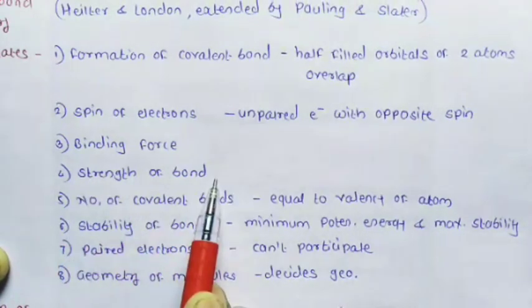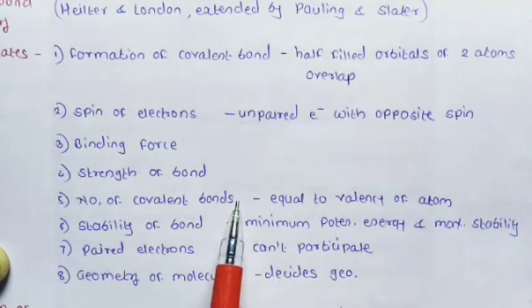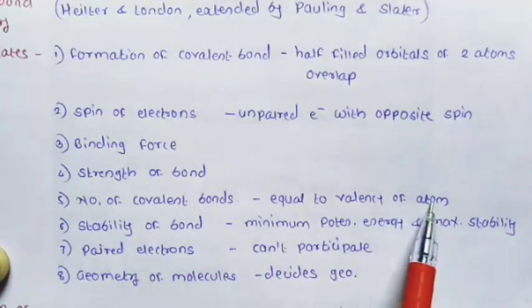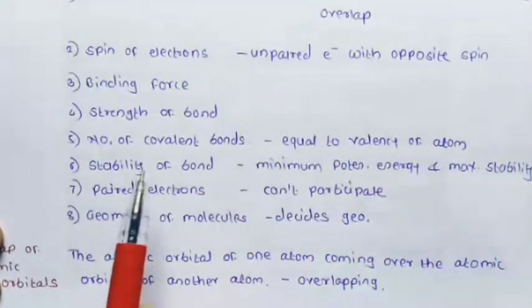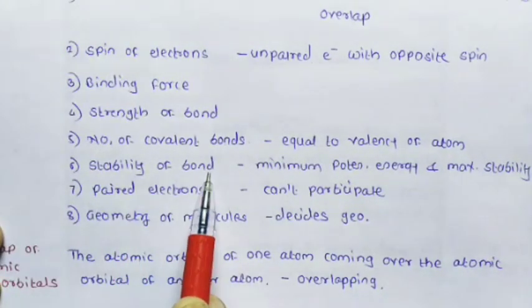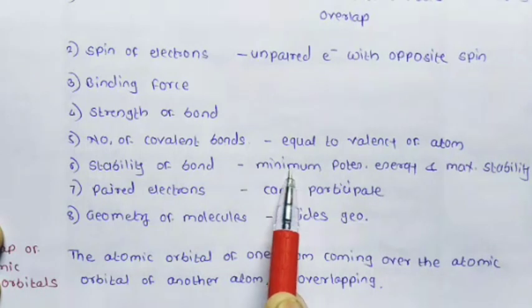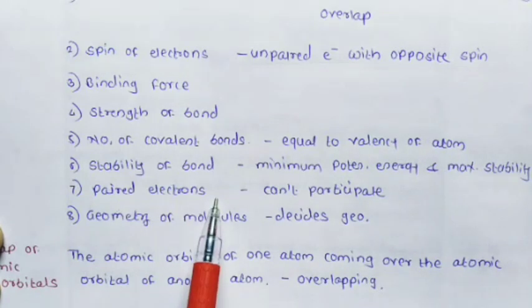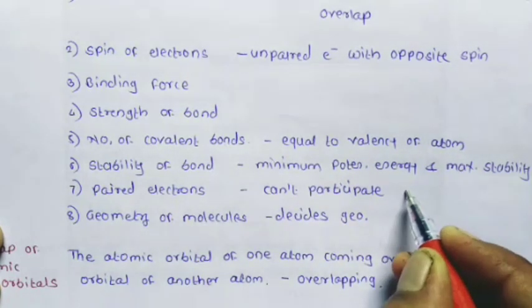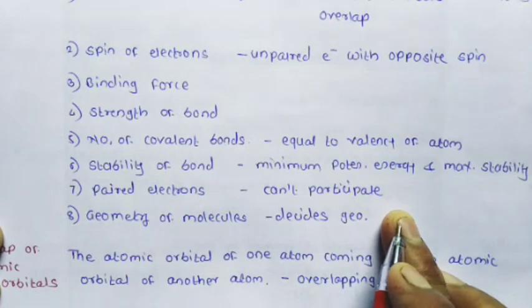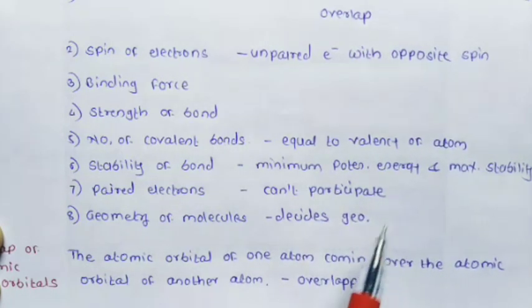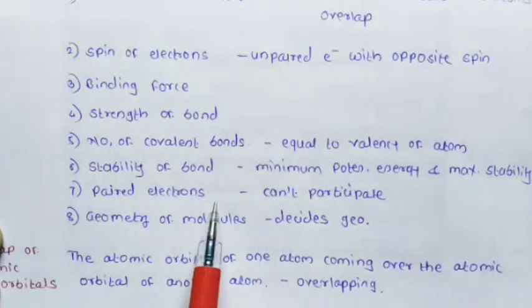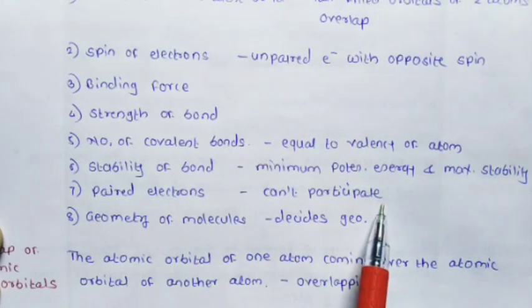Further postulates include: bonding force (third), strength of bond (fourth), number of covalent bonds equal to the valence of the atom (fifth), and stability of bond (sixth). In valence bond theory, minimum potential energy and maximum stability are acquired. Paired electrons — that is, diamagnetic electrons — cannot participate in covalent bond formation; only unpaired electrons with opposite spin participate.